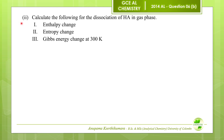Question number two: calculate the following for the dissociation of HA in the gas phase — enthalpy change, entropy change, and the Gibbs energy change at 300 Kelvin. We can get the answers for the enthalpy change and entropy change for this reaction using a thermochemical cycle.